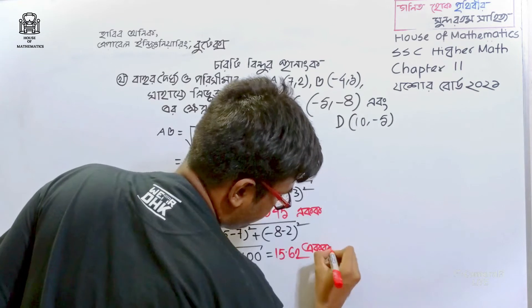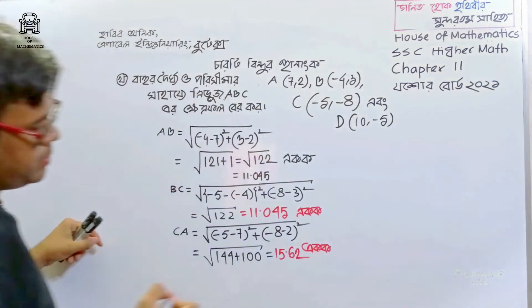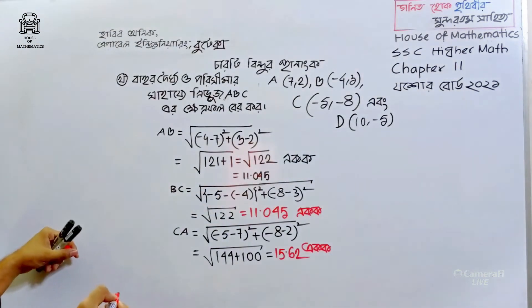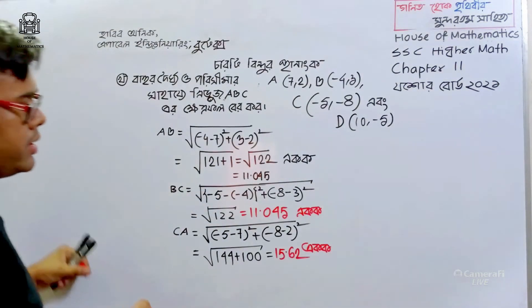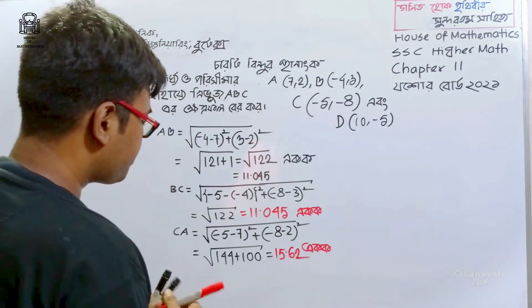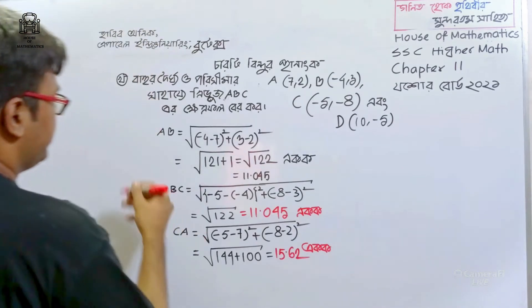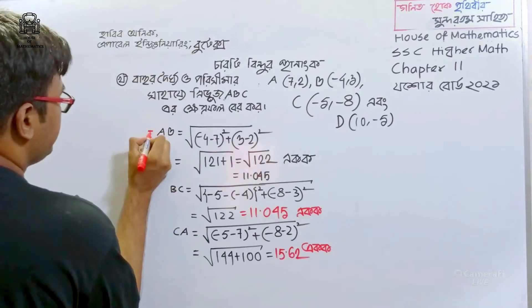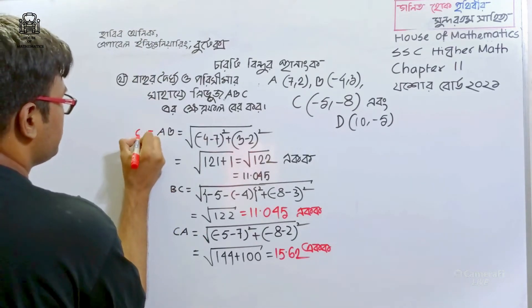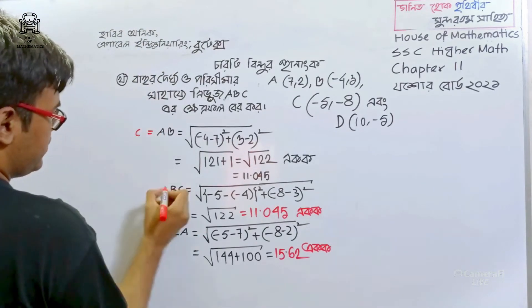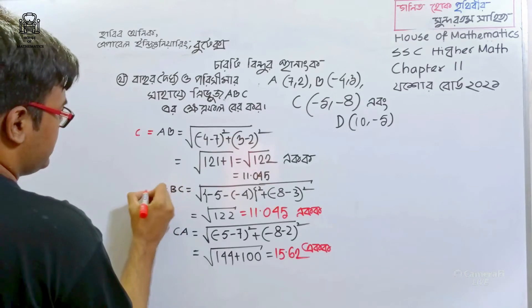I have three sides. That's great. Now we have to find AB, BC, and AC.